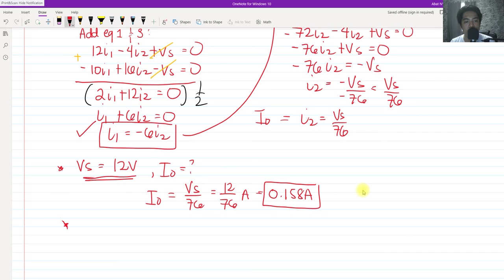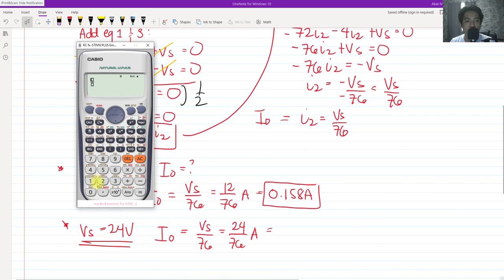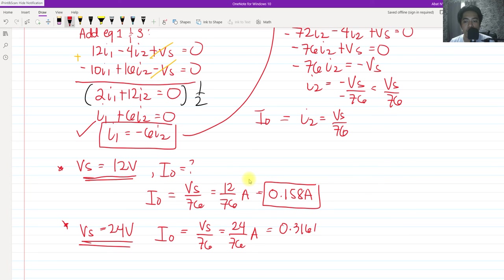How about when V sub S is 24 volts? Of course, the value of I sub O or the current I sub 2 will vary because it is dependent, it is linear with the voltage source. We have V sub S all over 76, so we have 24 all over 76 amperes, or 0.316 amperes. So you see, if we change the value of the voltage source, the value of I O is dependent upon the change of that voltage source. The output is dependent on the input. That is what we call a linear circuit.